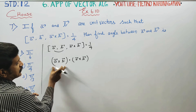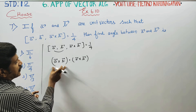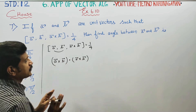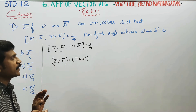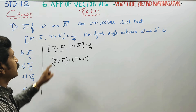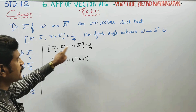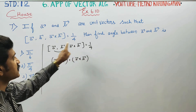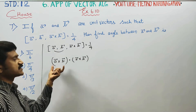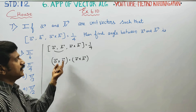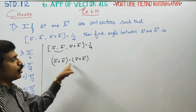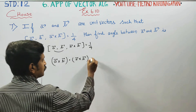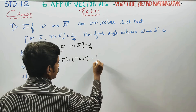That is, using bracket notation — when you release the square bracket, it becomes the box product release: two vectors cross, then dot. This gives us the scalar value equal to 1 by 4.